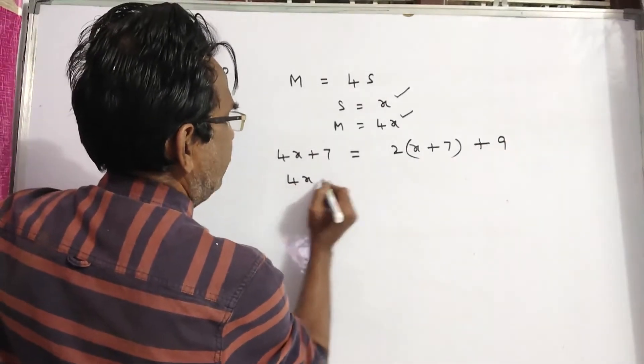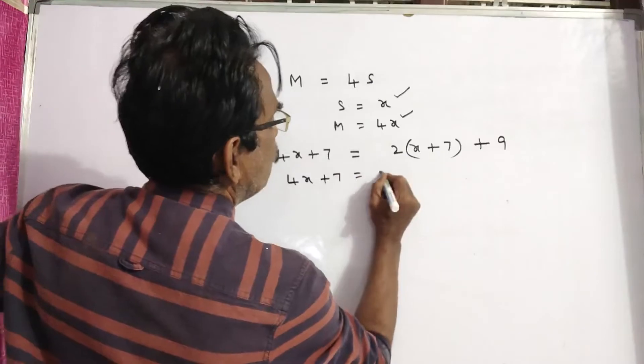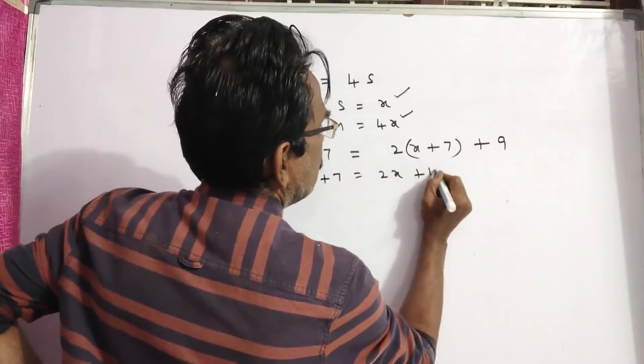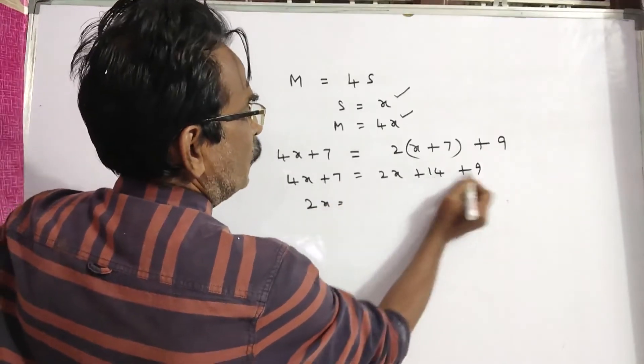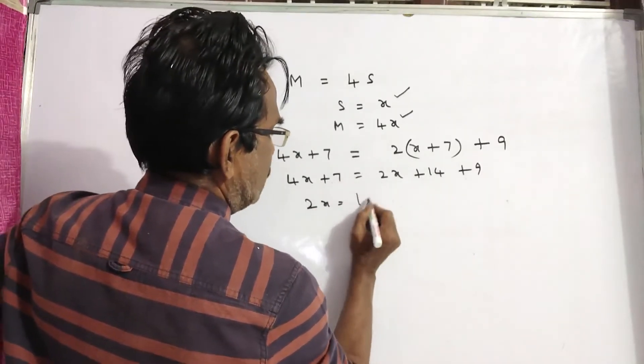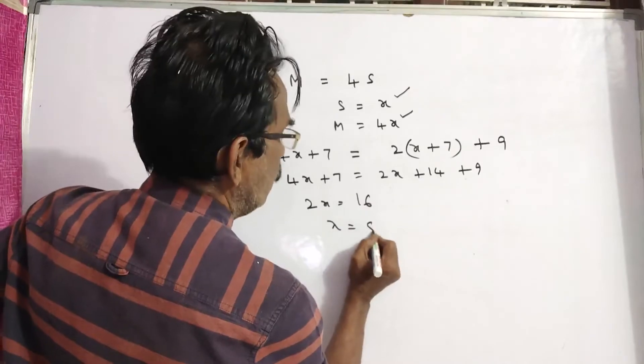So 4X plus 7 is equal to 2X plus 14 plus 9. Or 2X is equal to 23 minus 7 is 16. X is equal to 8.